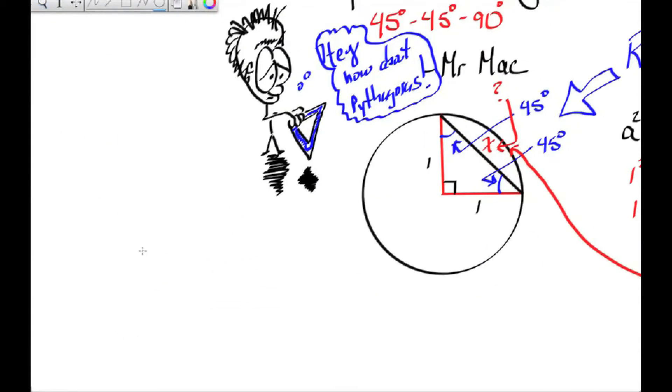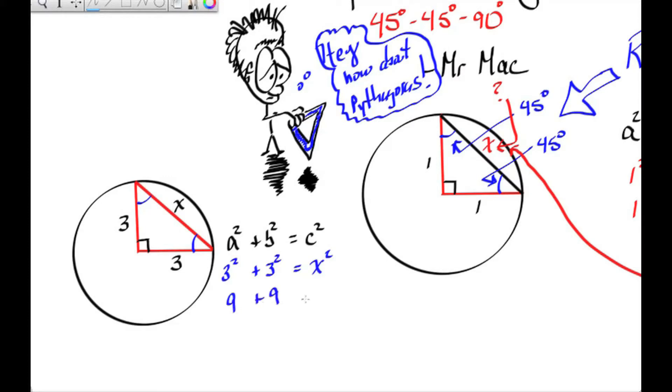So let's try this again. Same thing, except let's make the radius 3. So we still have a 45-45-90 triangle, and we're going to use Pythagorean Theorem and substitute 3 in for the legs. So we get root 18, which can simplify to 3 root 2.